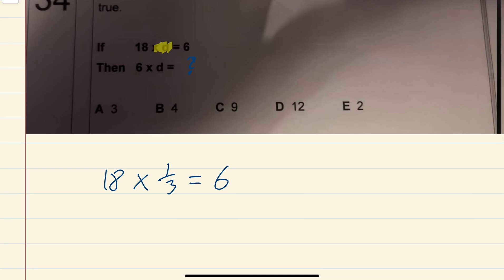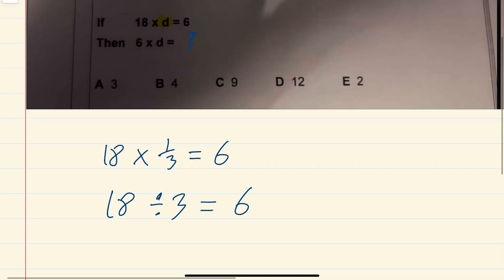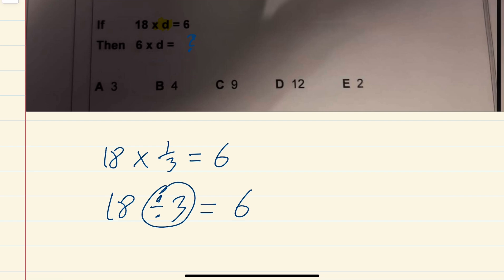So if you multiply here, if you multiply this thing by, sorry, if you do 18 divided by 3, that would give you 6. So instead, your times d is really the same as dividing by 3.